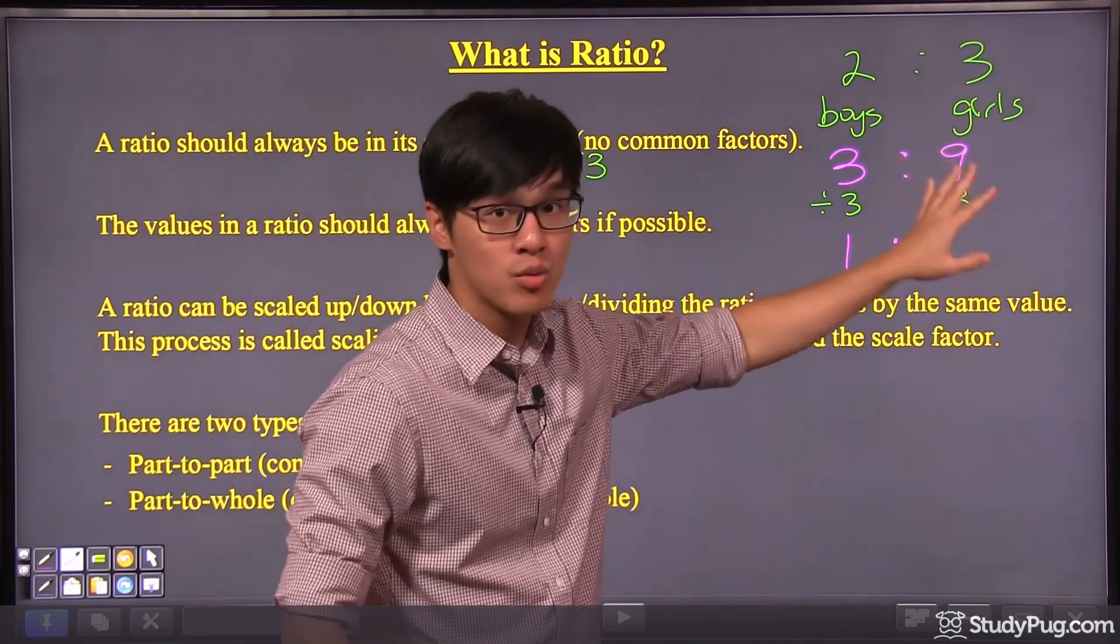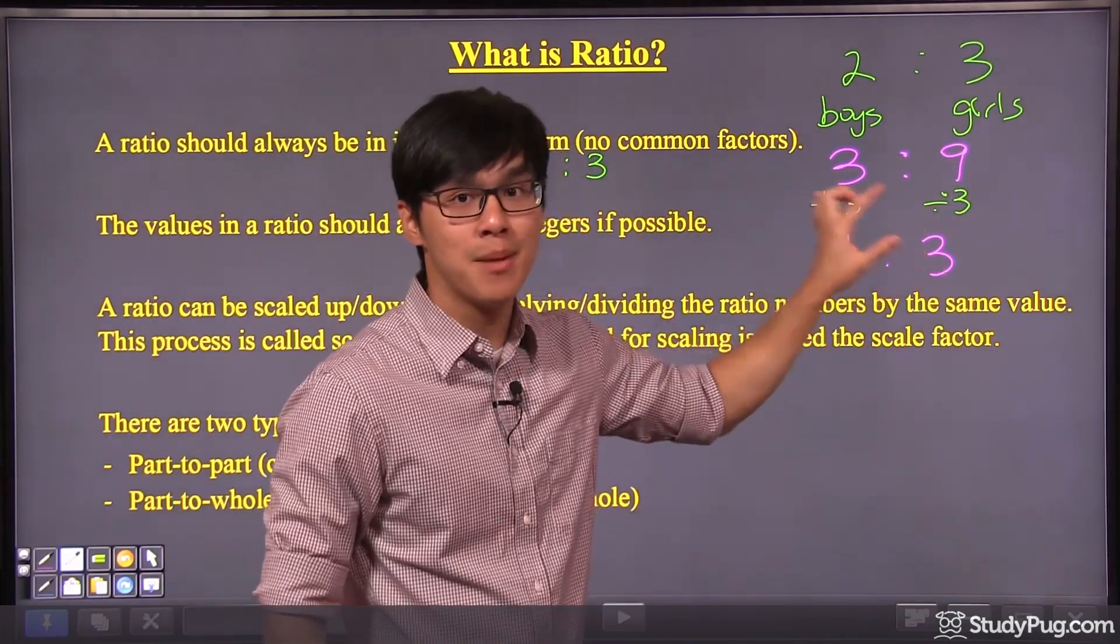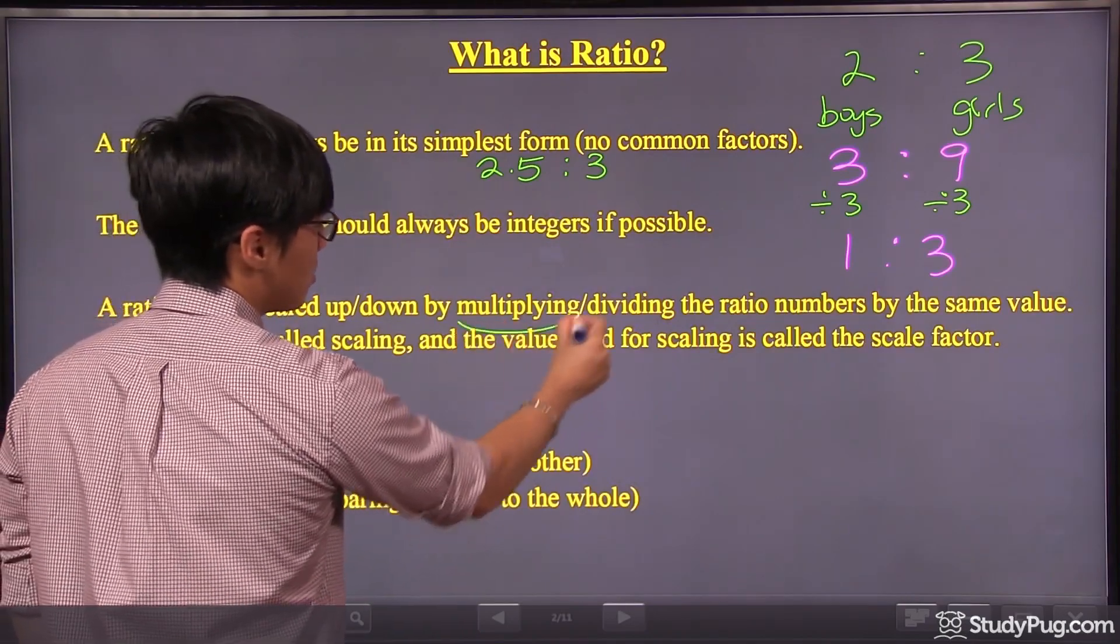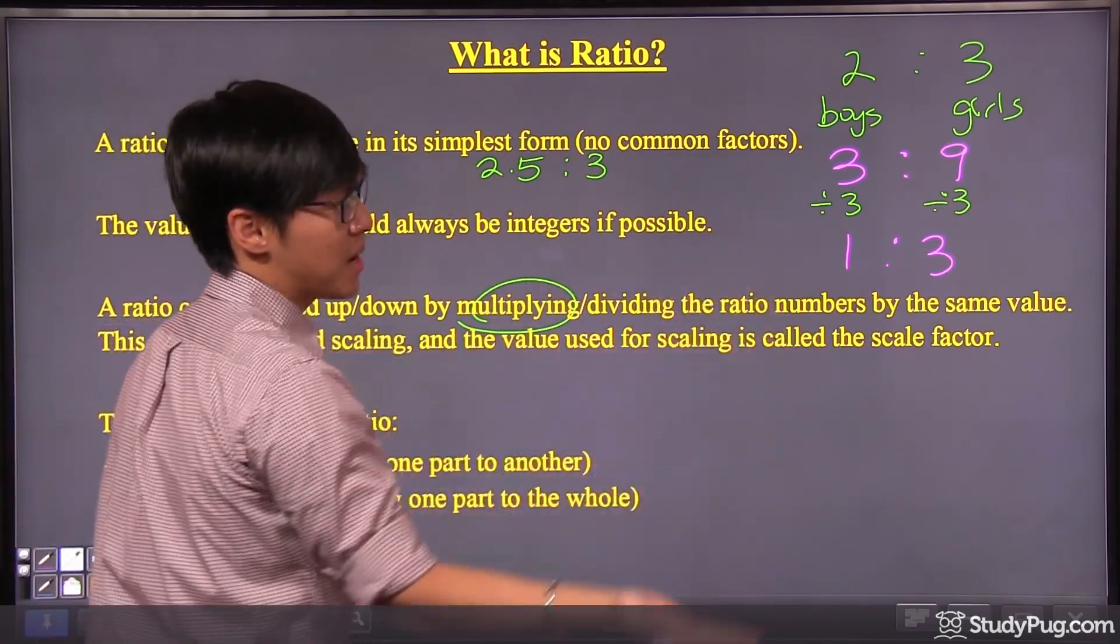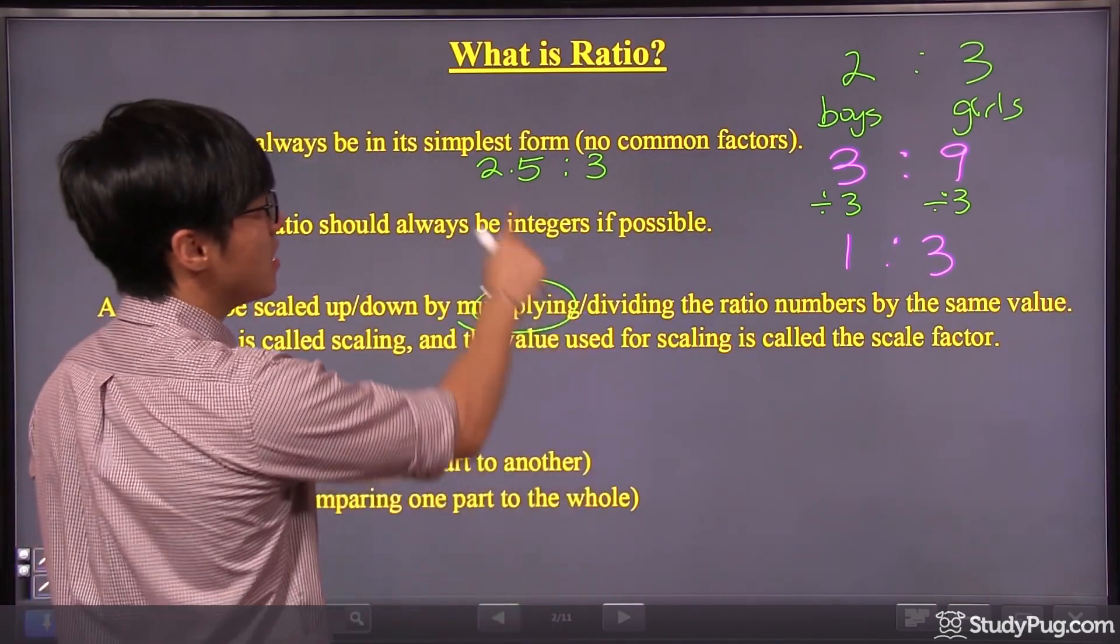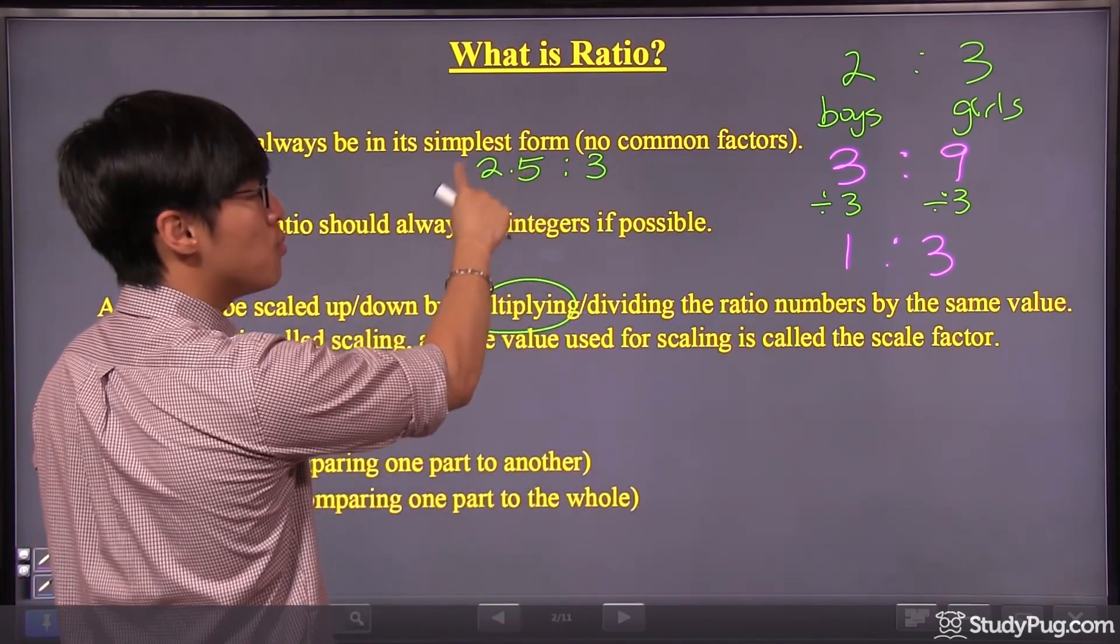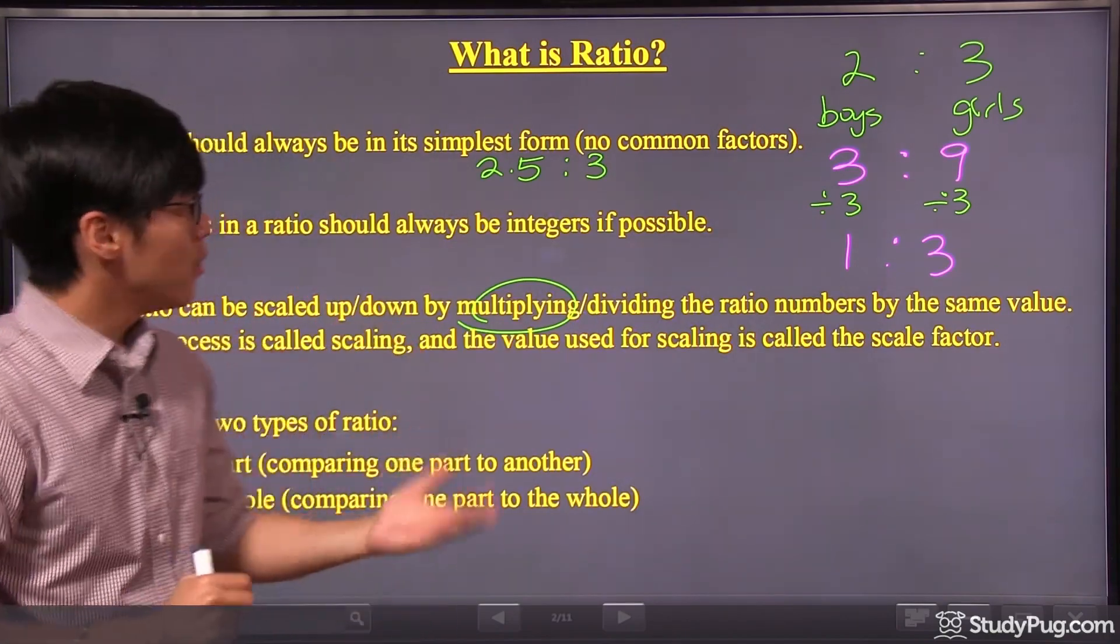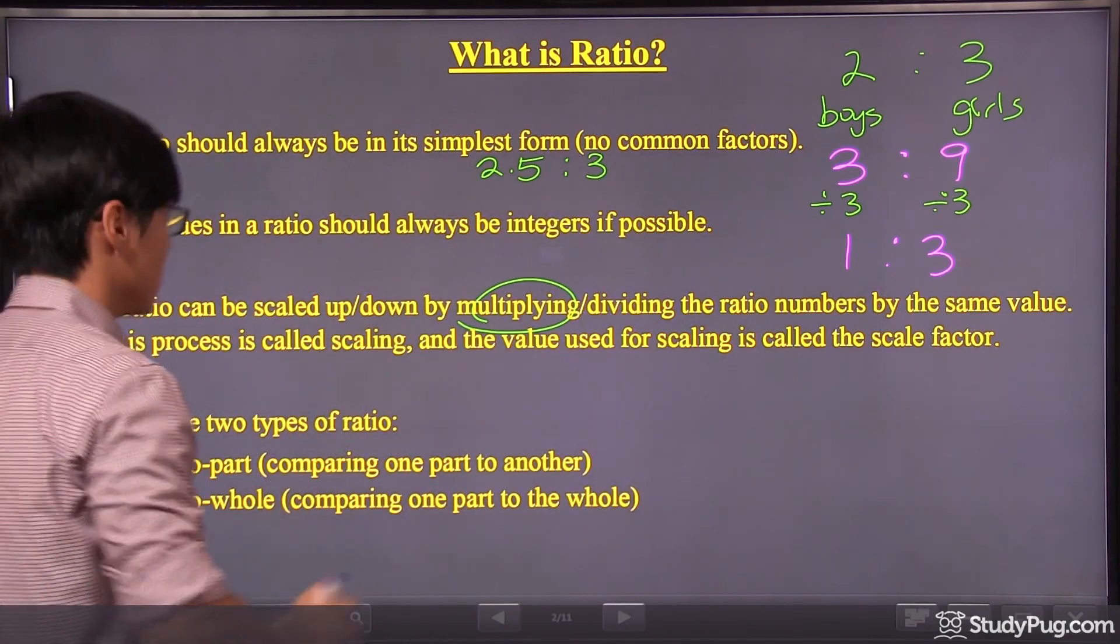Same for multiplying. We can multiply the ratio numbers by the same value as well. So can we somehow multiply 2.5 by a number such that we can convert it back into an integer? Yes, we can. Let's think about this. If we multiply 2.5 by 2, we can convert that into 2.5 times 2 gives us 5.